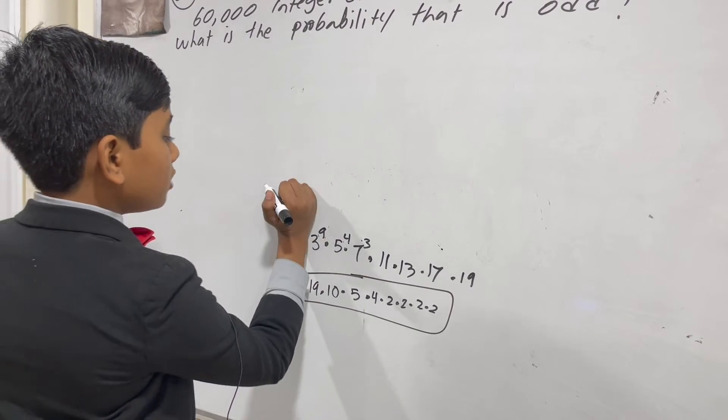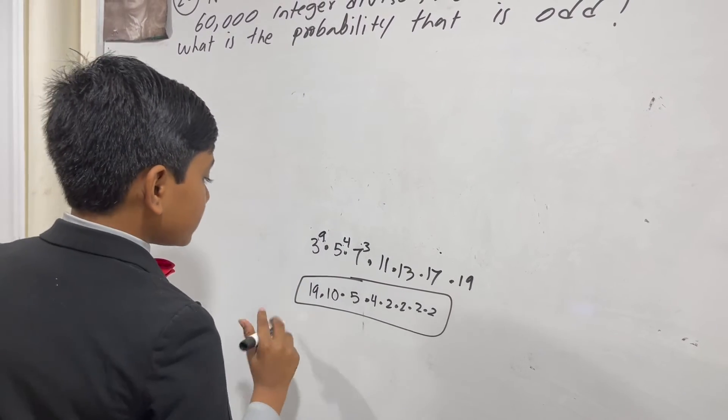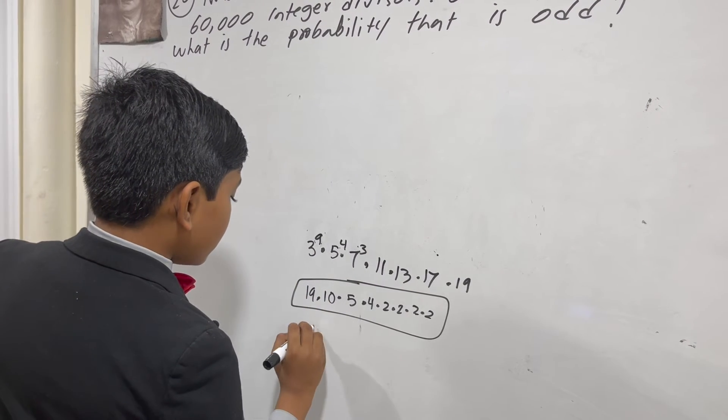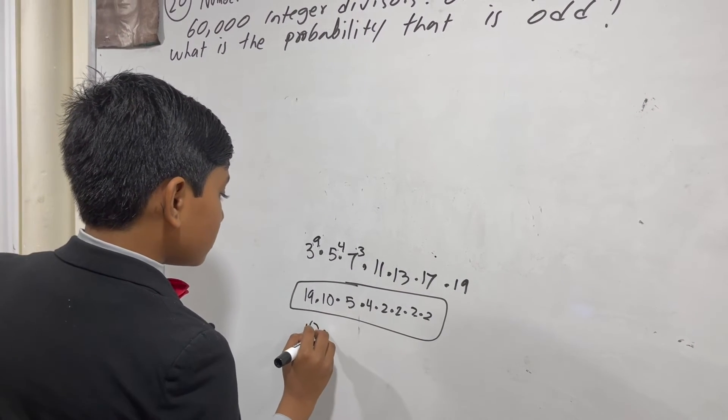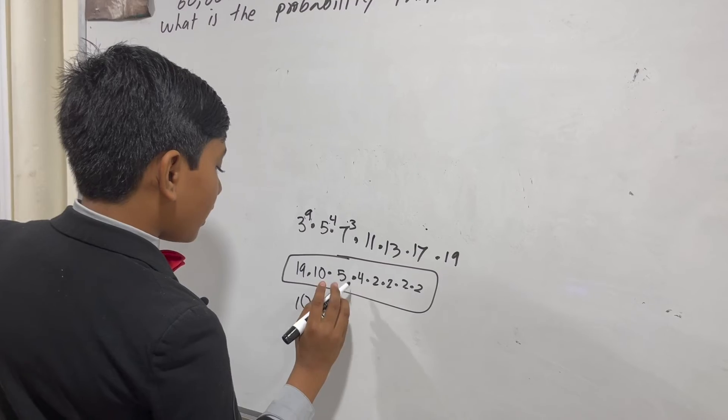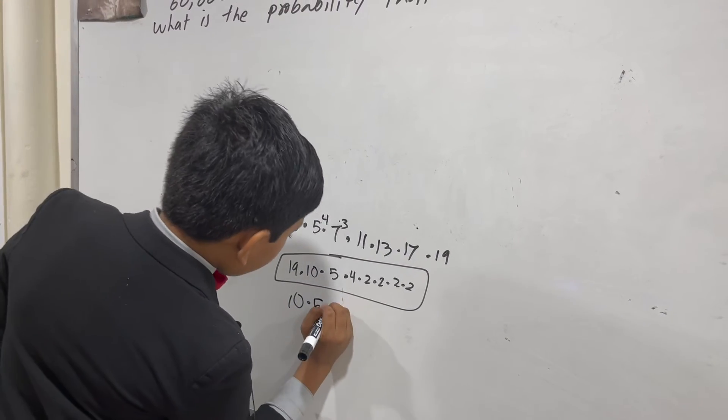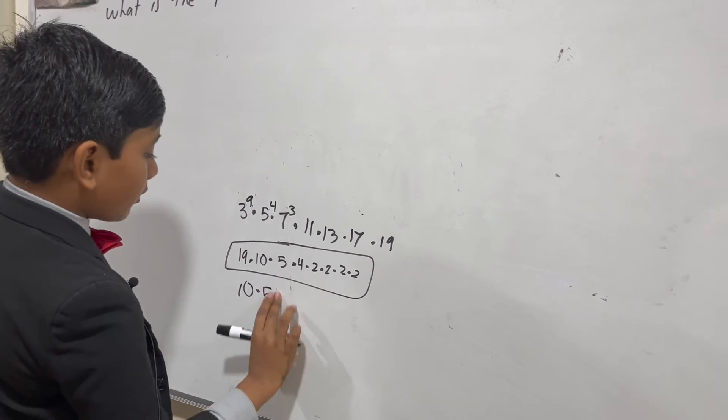So now the odd divisors look like this: 9 plus 1 is 10, 4 plus 1 is 5, and then we keep going from there: 4, 2, 2, 2, 2.